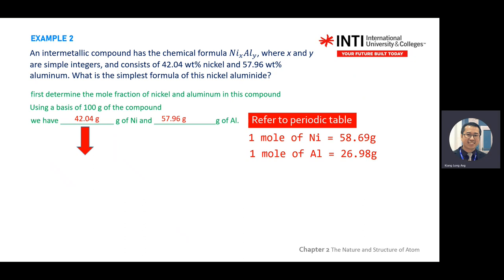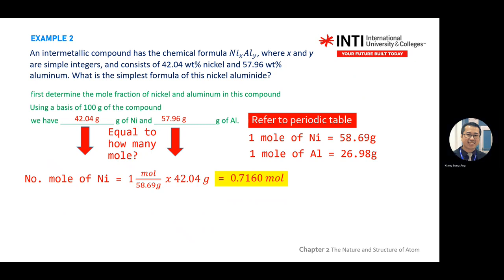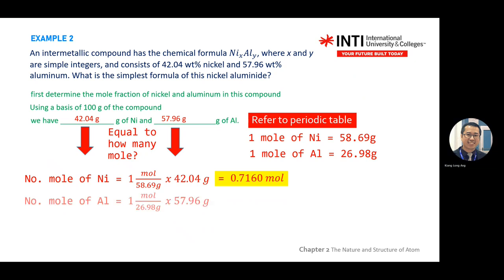You have 42.04 grams of nickel. One mole of nickel is 58.69 grams. You have 42.04 grams - how many moles? You take the grams of nickel and divide by the molar mass. You get approximately 0.716 moles for nickel. Do the same for aluminum: divide 57.96 by 26.9 and you get 2.148 moles. So both values are now in moles.